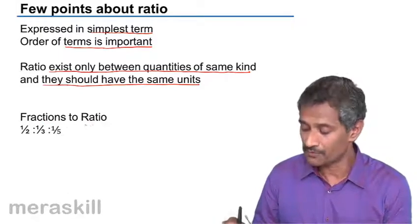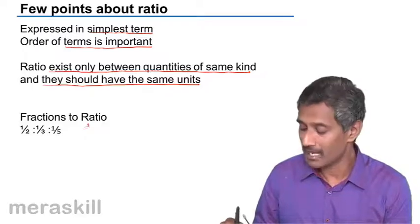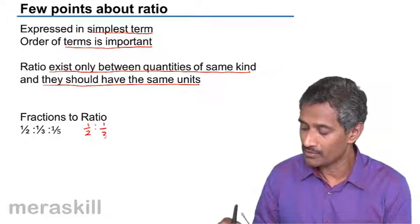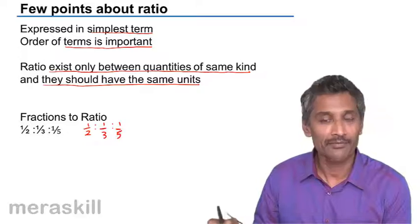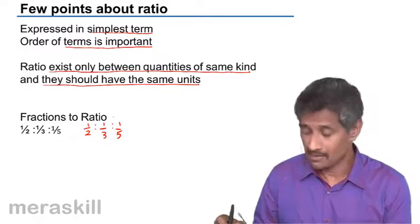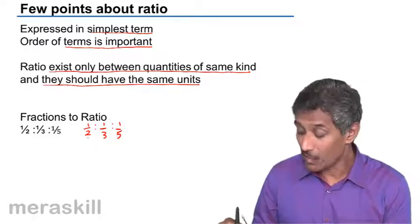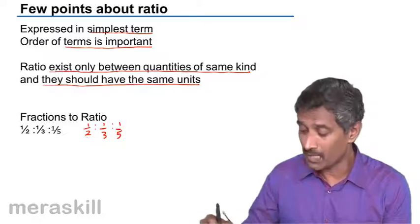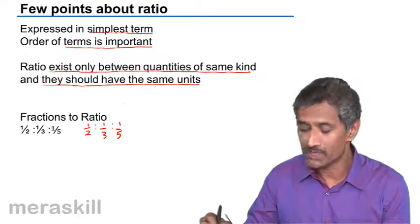For example, the ratio of three quantities is ½ is to ⅓ is to ⅕. Now, slight deviation from this – one thing you need to take care of.